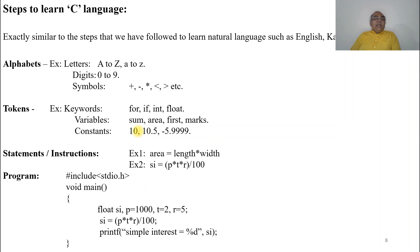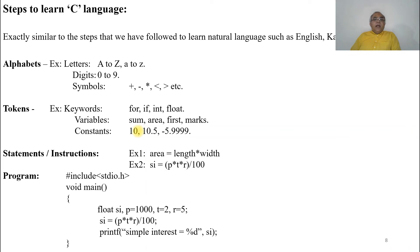What are the steps to learn C language? It is similar to the steps we follow to learn a natural language like English. The requirements are: alphabets — letters from capital A to Z or small a to z; digits — 0 to 9; and symbols such as plus, minus, star, less than, greater than, etc.